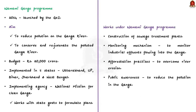The final important step is the launching of the Namami Ganga program in 2014. It is an integrated mission that aims to reduce pollution in the Ganga river, conserve and rejuvenate the polluted river. The program was set with a total budgetary outlay of rupees 20,000 crore and is being implemented in five Ganga basin states. The National Mission for Clean Ganga is the implementing agency.